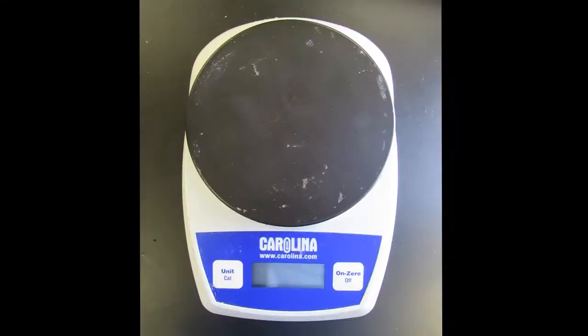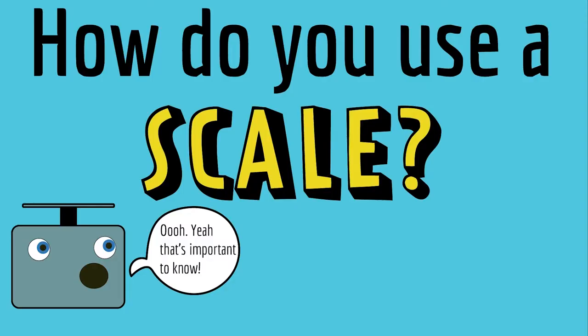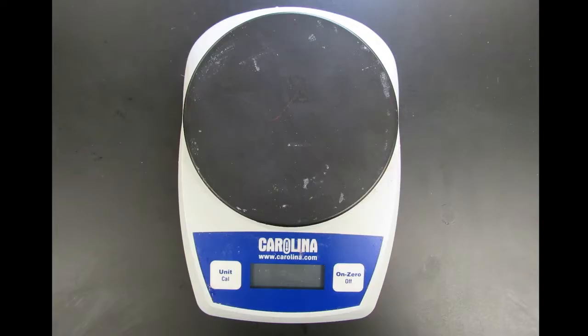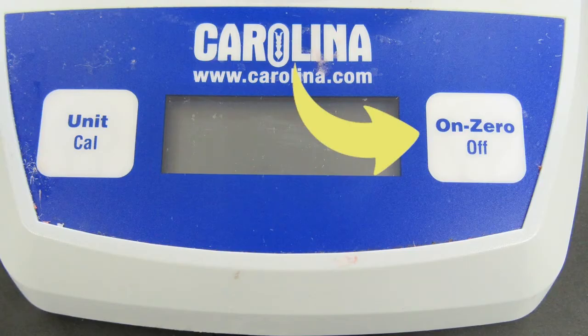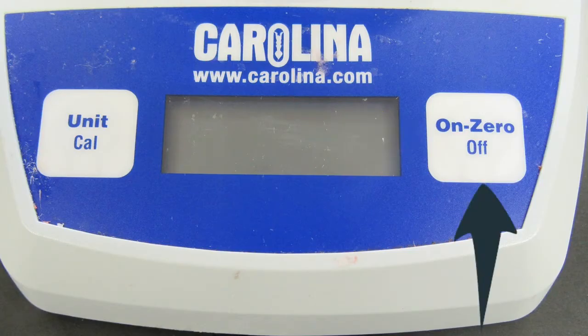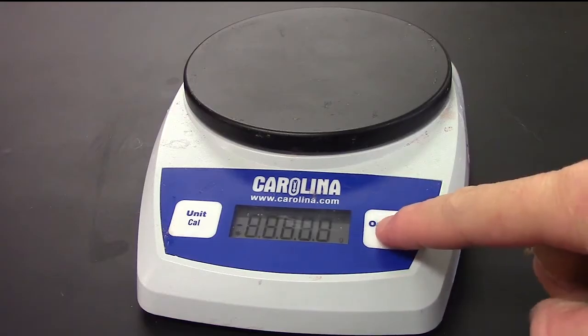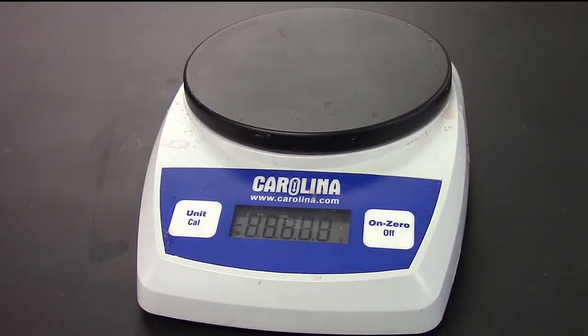Today we will show you how to properly use a scale, just like the scientists who conducted the experiment. There are many different types of scales, but they all have the same basic features. There is an on and off button, and there is also a button that will set the weight on the device to zero, or tare it. When you go to weigh something, you have to turn on the scale and allow it to calibrate.